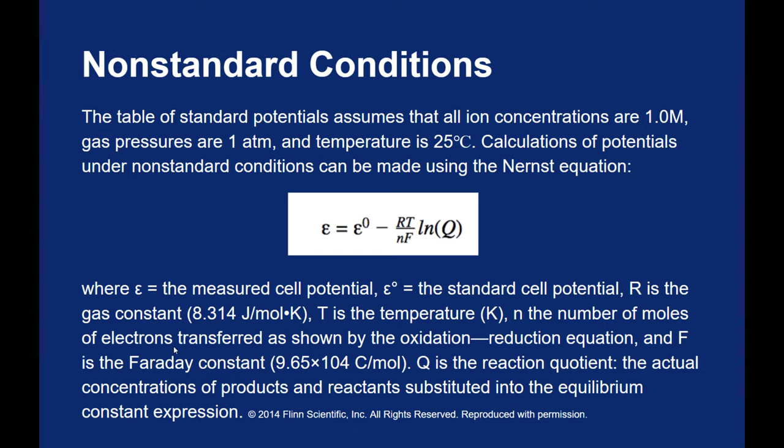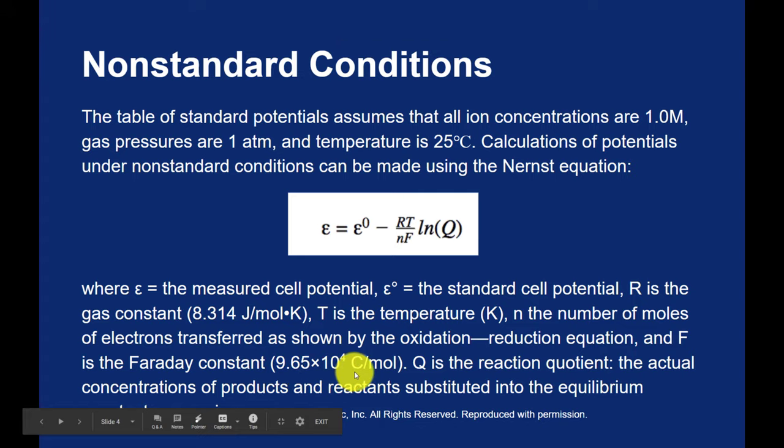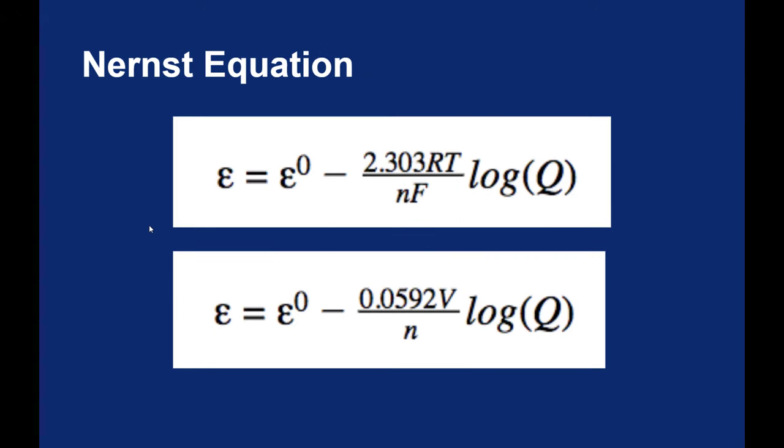That said, I want to take a moment to look at something that's actually not on the AP exam. This is from a lab we would have done if we were all in class together, from Flynn Scientific: finding the electric potential of voltaic cells under non-standard conditions. You can see here that we have an equilibrium expression involved with converting a standard electric potential to a non-standard electric potential. R is the universal gas constant, T is temperature, N is the number of moles, and F is that Faraday constant I just showed you, 9.65 times 10 to the 4 coulombs per mole. This equation is referred to as the Nernst equation.